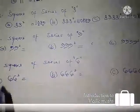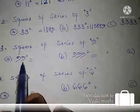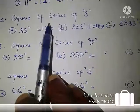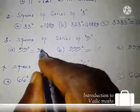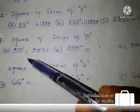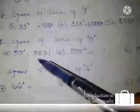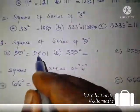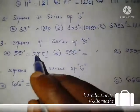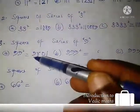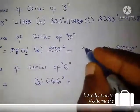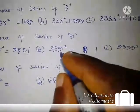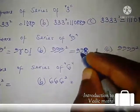Now we move to the series of nines. For 99 squared: we already know 33 squared is 1089. If we write 1089 backward, we get 9801 — and that is the square of 99. The second and last digits are constant: 8 and 1. For 999 squared — three digits — 8 and 1 are constant, and we introduce two nines and two zeros: 998001.